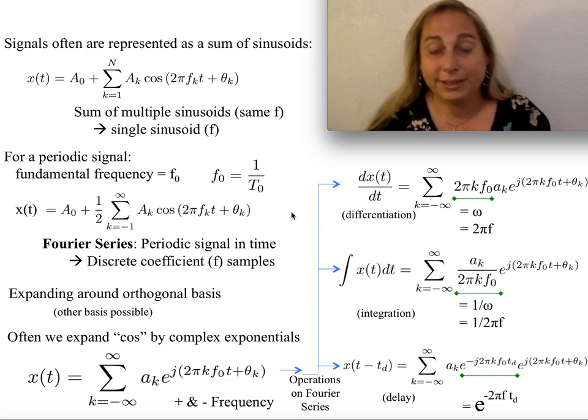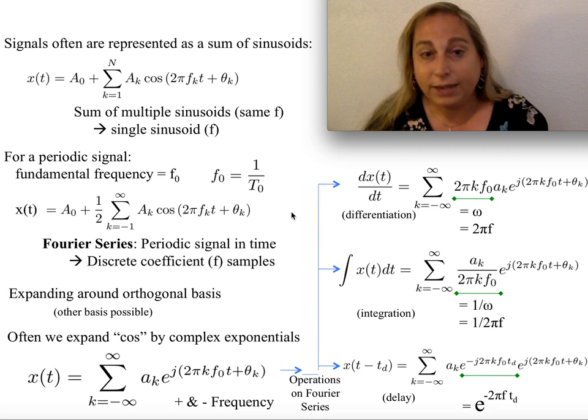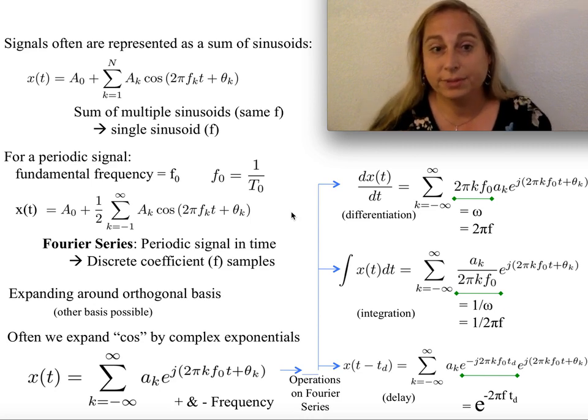You're probably familiar with a single sinusoid being considered a signal. But signals can often have many different properties. It turns out that signals can often be represented as a sum of sinusoids, which will be a whole set of different frequencies with amplitude and phases to them.